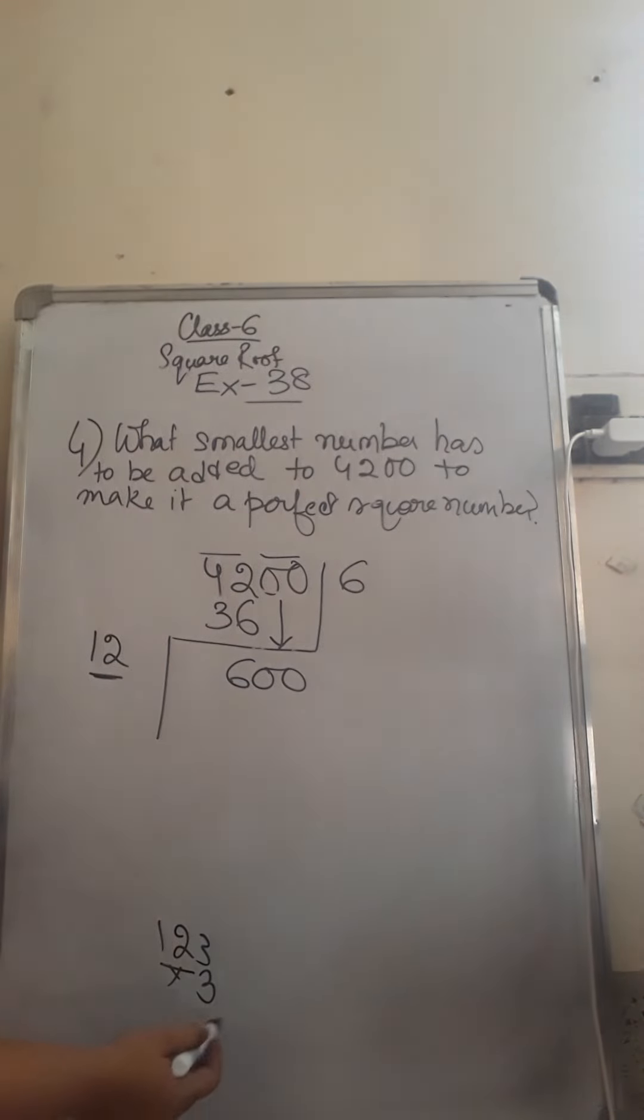12 is fixed, only this part can change. If you take 3, multiply with 3. If you take 124, you have to multiply with 4. And in this way, you have to find which will divide or which can be nearest to 600.